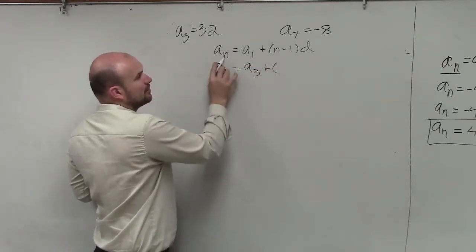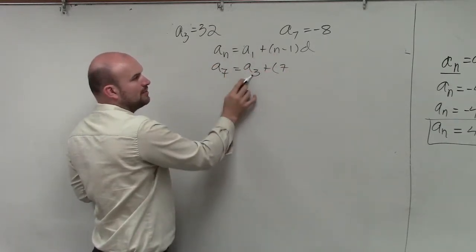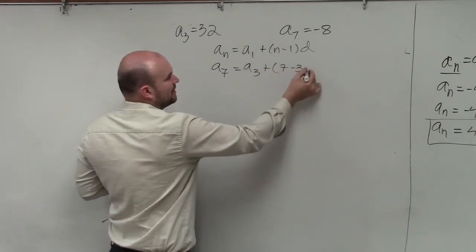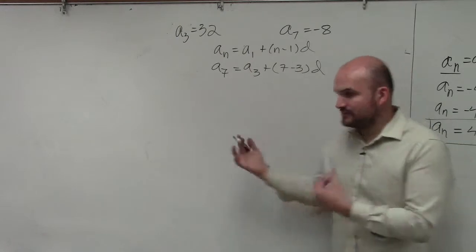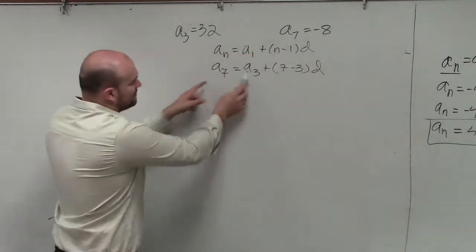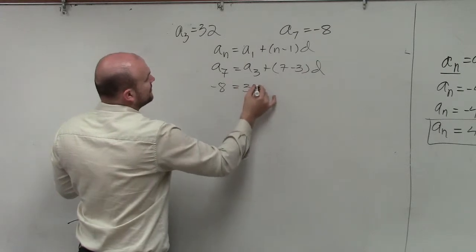Therefore, if I'm going to replace n with 7, I've got to replace this n with a 7. If I'm going to replace 1 with 3, I have to replace this 1 with a 3. Now, the reason why I do this, though, is because we know the values of a sub 7, and we know the value of a sub 3.